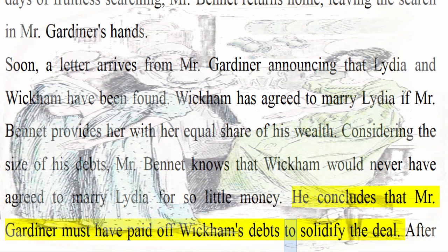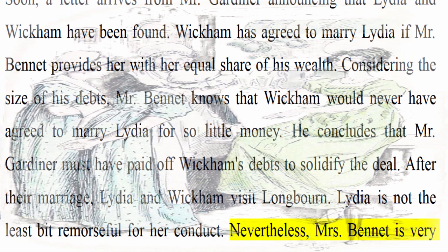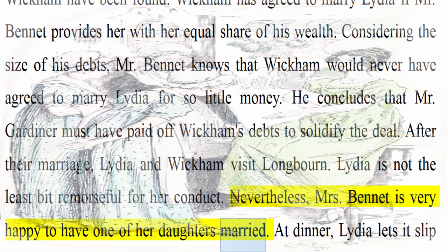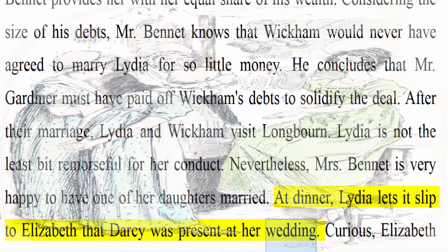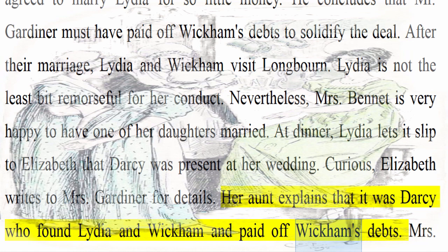After their marriage, Lydia and Wickham visit Longbourn. Lydia is not the least bit remorseful for her conduct. Nevertheless, Mrs. Bennet is very happy to have one of her daughters married. At dinner, Lydia lets it slip to Elizabeth that Darcy was present at her wedding. Curious, Elizabeth writes to Mrs. Gardiner for details. Her aunt explains that it was Darcy who found Lydia and Wickham and paid off Wickham's debts. Mrs. Gardiner believes that Darcy did this out of love for Elizabeth.